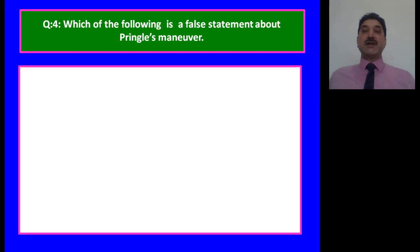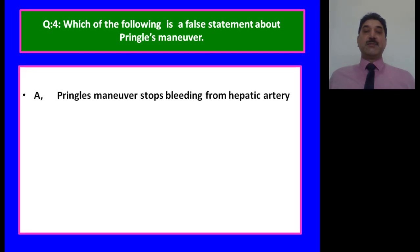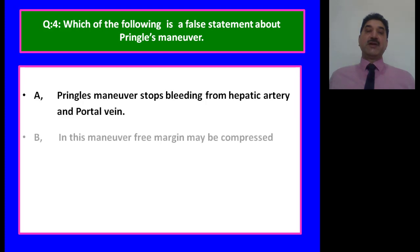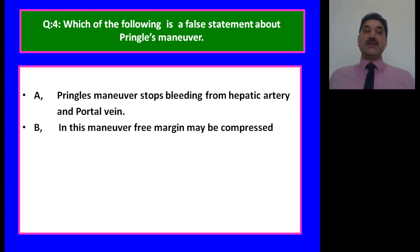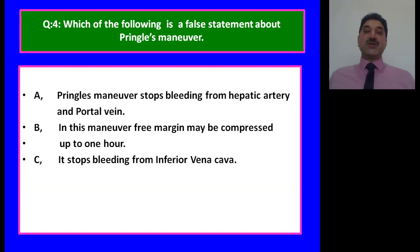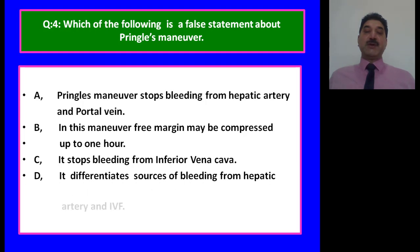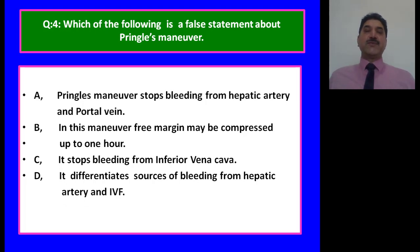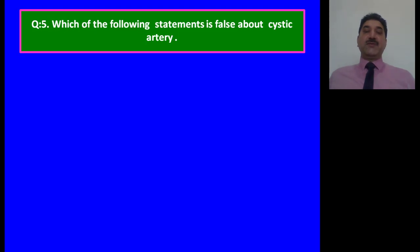Which of the following is a false statement about Pringle's maneuver? Options: A — it stops bleeding from the hepatic artery and portal vein; B — the free margin may be compressed up to one hour; C — it stops bleeding from the inferior vena cava; D — it differentiates sources of bleeding from the hepatic artery and inferior vena cava. The answer is C. Since the inferior vena cava lies posterior to the free margin of the lesser omentum, in Pringle's maneuver we compress the free margin containing the hepatic artery and portal vein, but not the inferior vena cava.